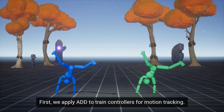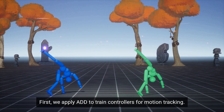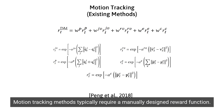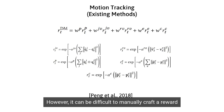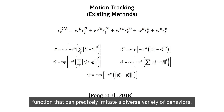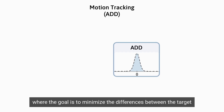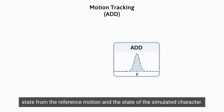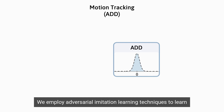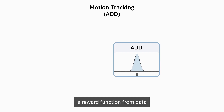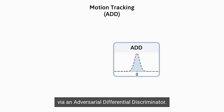We apply ADD to train controllers for motion tracking. Motion tracking methods typically require a manually designed reward function. However, it can be difficult to manually craft a reward function that can precisely imitate a diverse variety of behaviors. In this work, we model motion tracking as a multi-objective optimization problem, where the goal is to minimize the differences between the target state from the reference motion and the state of the simulated character. We employ adversarial imitation learning techniques to learn a reward function from data via an adversarial differential discriminator.